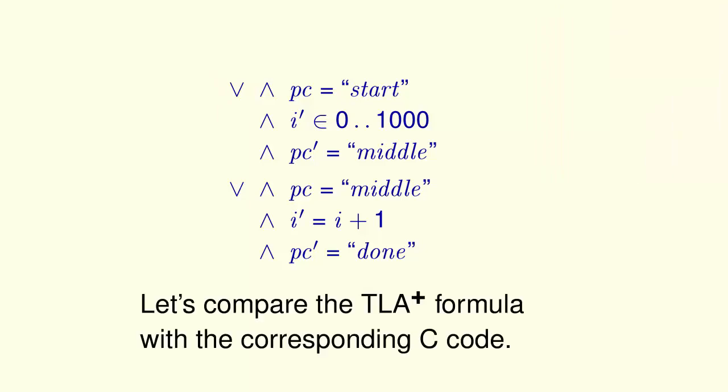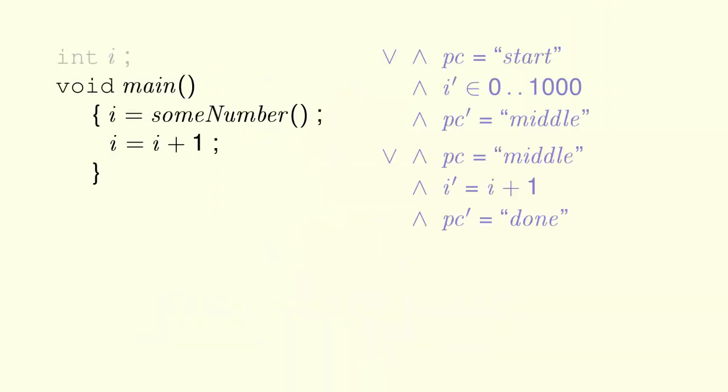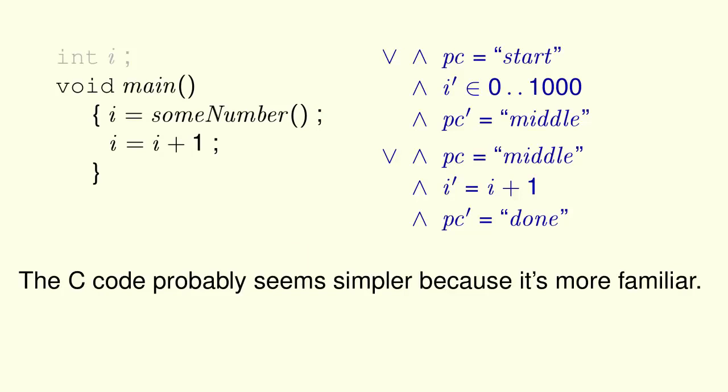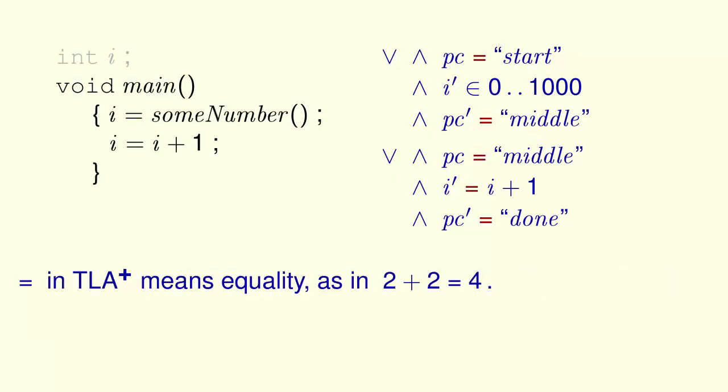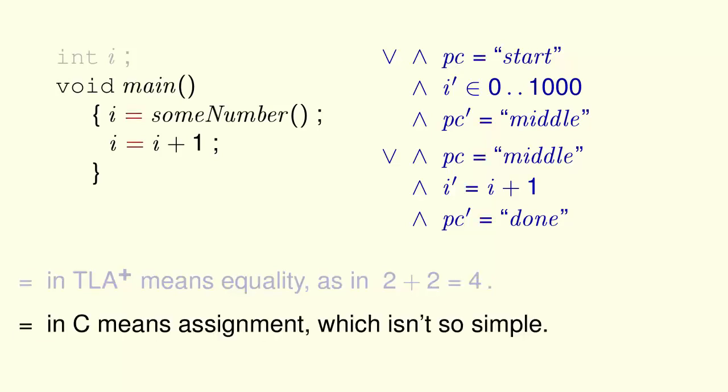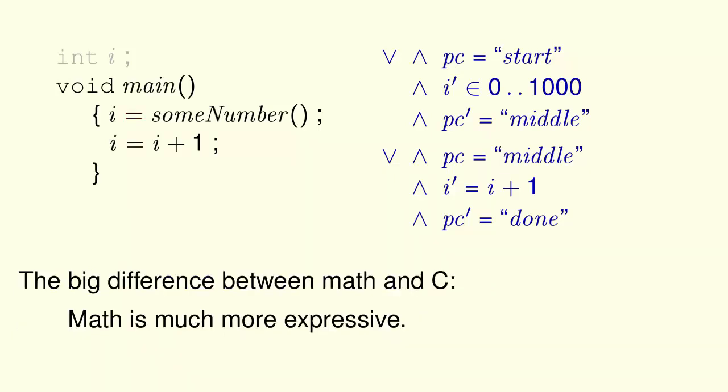Now let's compare the TLA plus formula with the corresponding C code, which is the C code without the declaration of i. The C code probably seems simpler than the TLA plus formula because it's more familiar to you. But the C code isn't really simpler. For one thing, the equal sign in TLA plus means equality, just as in grammar school when you wrote 2 plus 2 equals 4. The equal sign in C means assignment, which isn't so simple. But the big difference between math and C is that math is much, much more expressive.